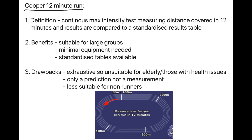The third method is the Cooper 12-minute run. This is a continuous maximal intensity test which measures the distance covered in 12 minutes, and results are compared to standardised results tables. The benefits are it is suitable for large groups, minimal equipment is needed — just a track with a known distance — and standardised tables are available. The drawbacks are it is exhaustive, so unsuitable for the elderly or those with health issues, it is only a prediction not a measurement, and less suitable for non-runners.